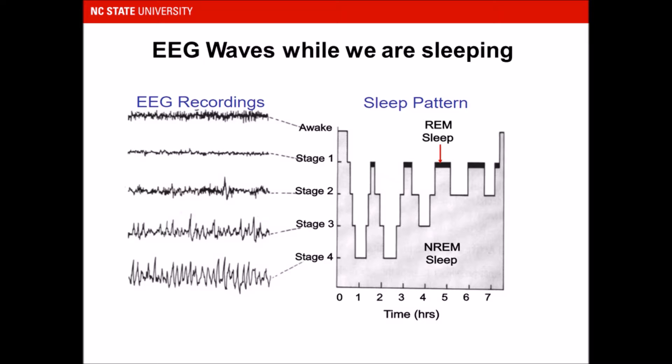We can also look at EEG recordings for different stages. When we are awake we have all kinds of mixed signals. In stage 1 there is very low activity. In stage 2 the amplitude increases and frequency decreases. In stages 3 and 4 we have very high amplitude EEG signals at very low frequencies. The REM sleep EEG recordings are almost similar to EEG recordings when we are awake.